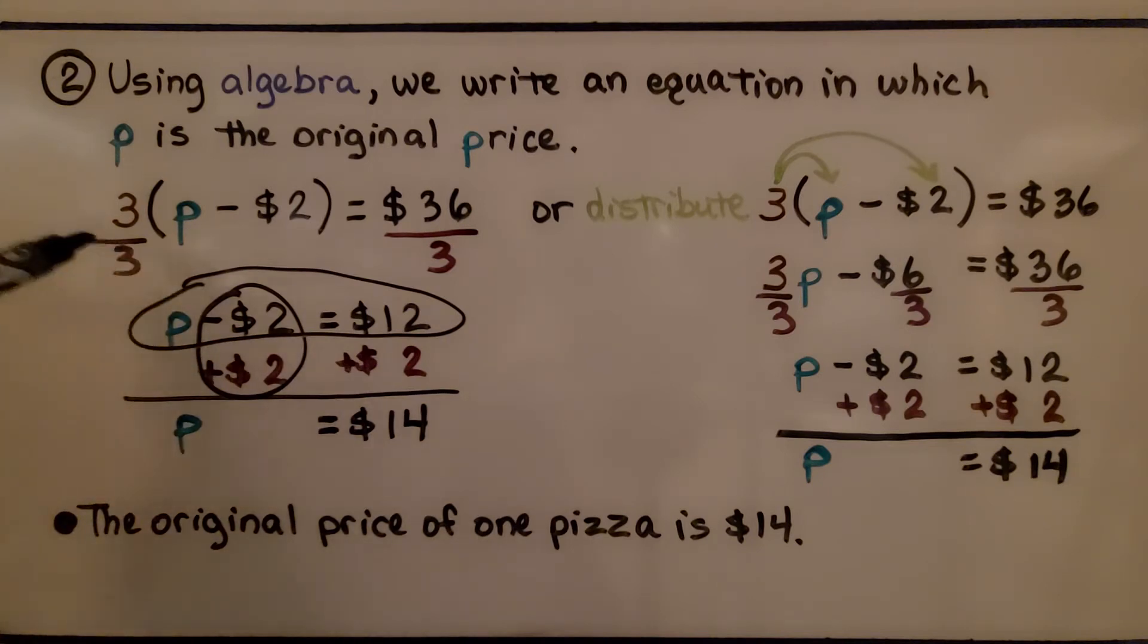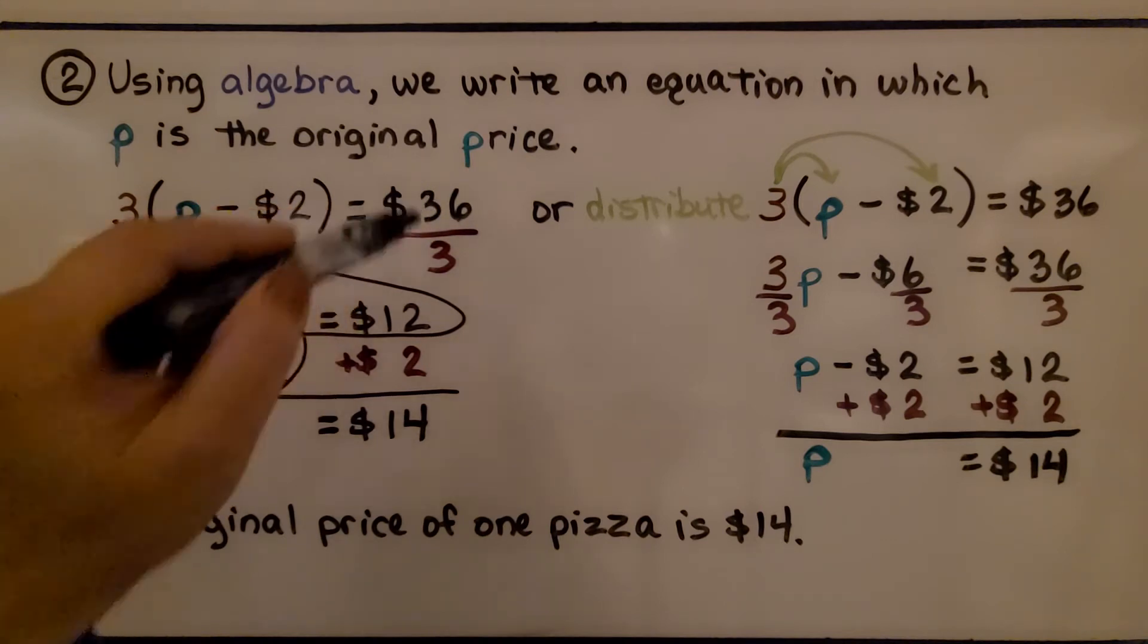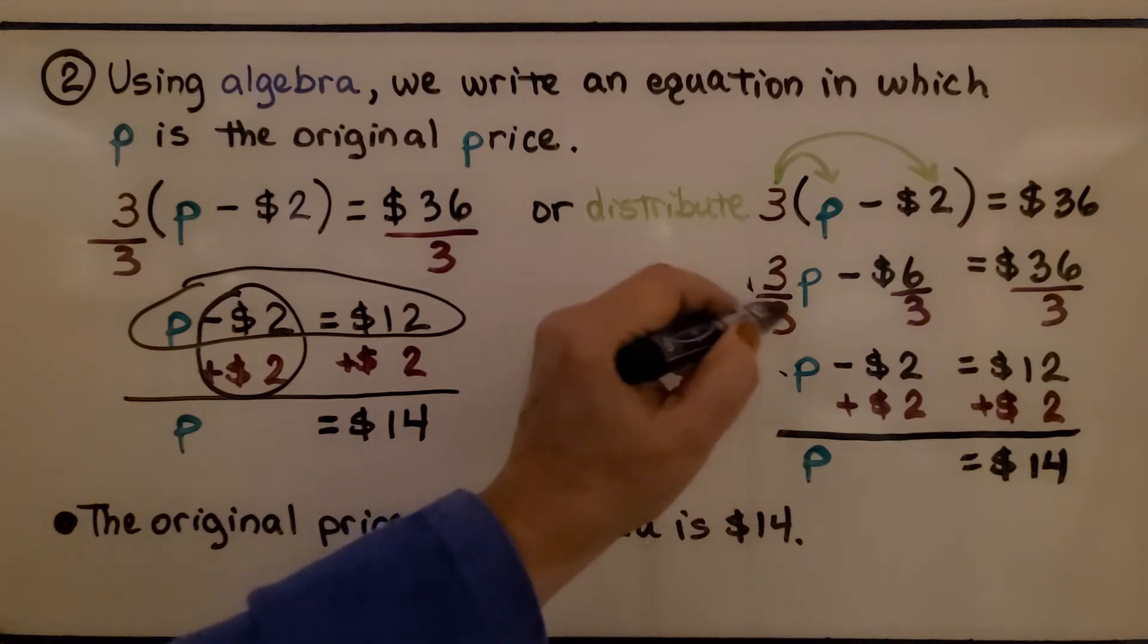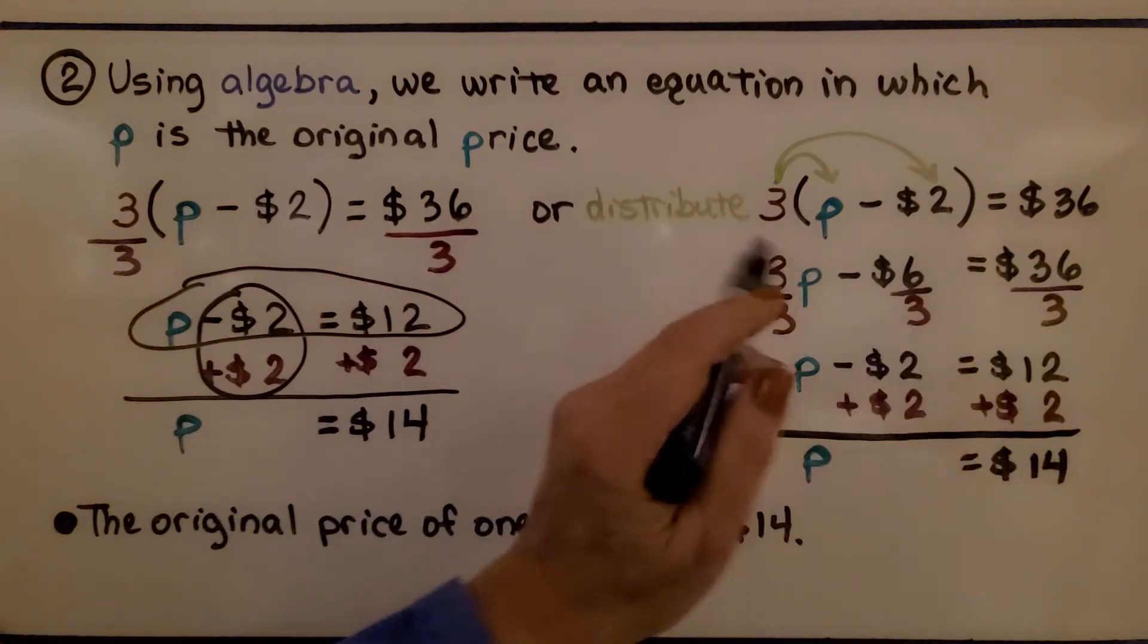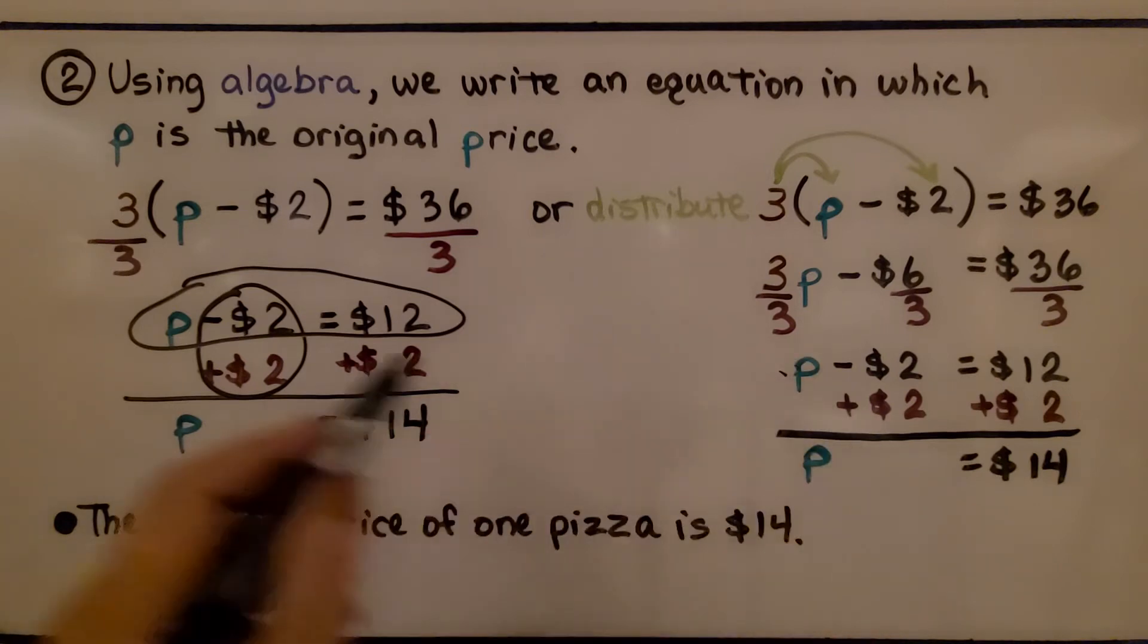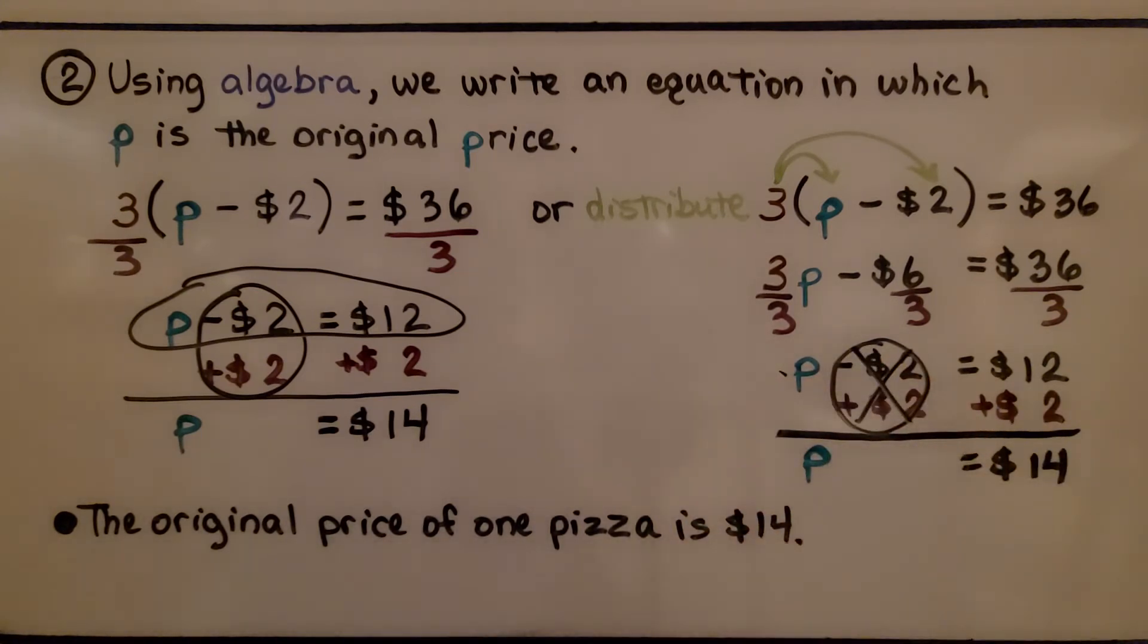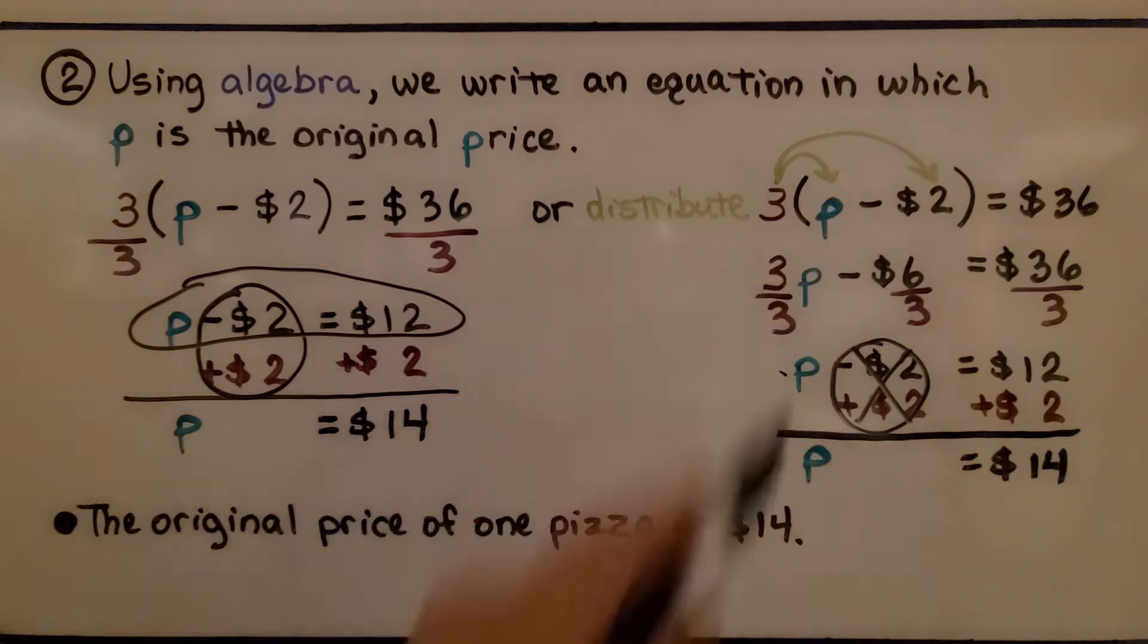So do you see how, when we were here, by just dividing this 3 and the $36, it actually brought us to this place. We ended up not having to do this because we immediately divided here. When we distribute, now we're going to have to divide each term by the 3, by this coefficient 3. So now we're at p minus $2 is equal to $12. We can do the same thing we did here, and eliminate this minus $2 by adding $2 to each side. And it goes away, and now we have p is equal to $14. So we're getting the same answer, whether we distribute this 3 into the parentheses or not.